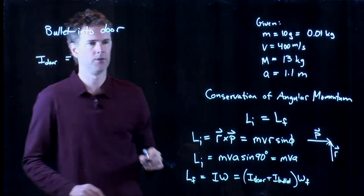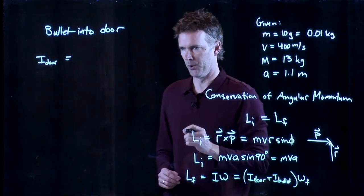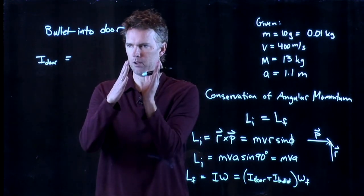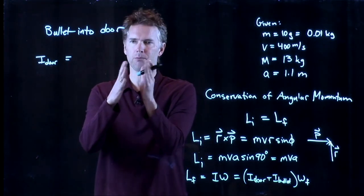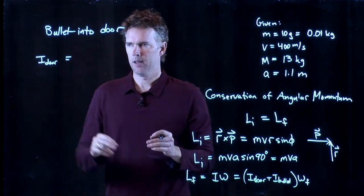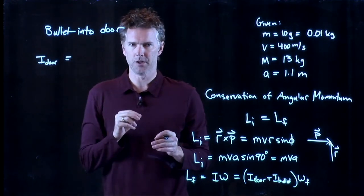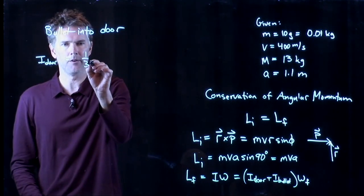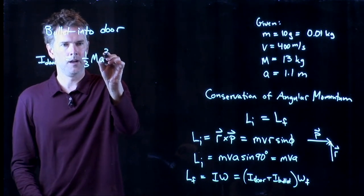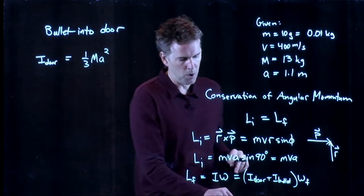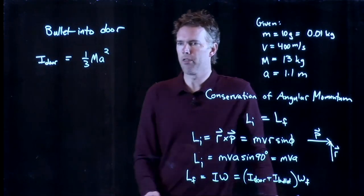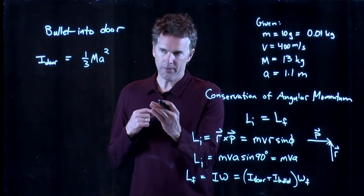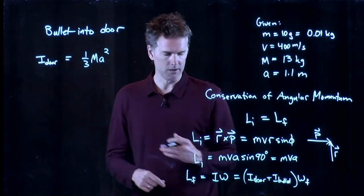One thing we need to know is the moment of inertia of the door. The door is a slab of wood. And it's rotating about its hinge. And you can calculate the moment of inertia by doing that integral. Or you can look it up in the book because they've already done those integrals. And what they tell you is that the moment of inertia of the door is one-third Ma squared. Where a is the width of the door. How far from the hinge is the edge of the door.